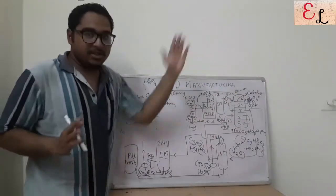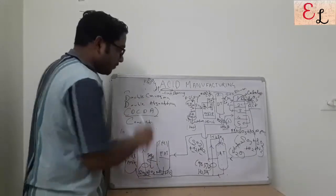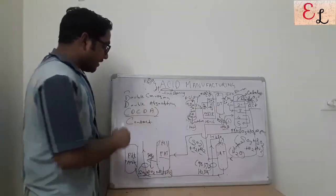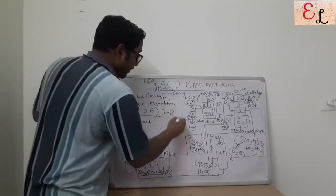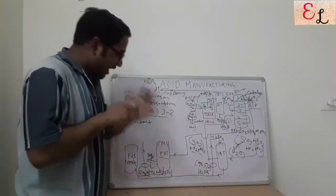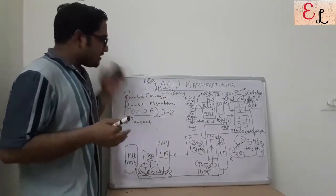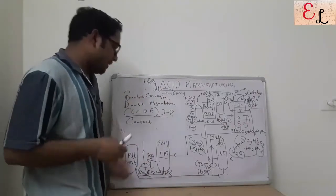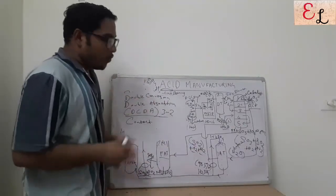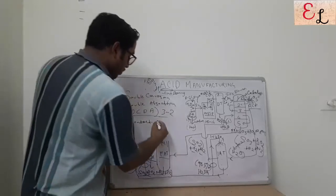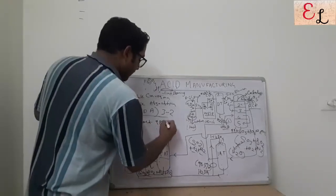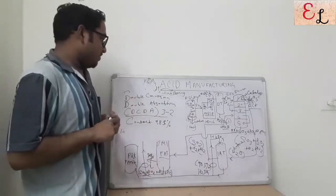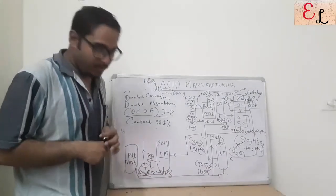In the DCDA process: double conversion means first conversion in the first three beds, then again conversion in the fourth and fifth beds. Double absorption means first absorption in the Intermediate Absorption Tower (IAT) and finally from the fifth bed into the Final Absorption Tower (FAT). This is the 3-2 pass system. Some systems are 3-1, meaning three beds then the IAT then the fourth bed and FAT. The design depends on the total number of beds and other factors. This process produces H2SO4 of 98.5% purity, concluding the discussion on the acid manufacturing unit.